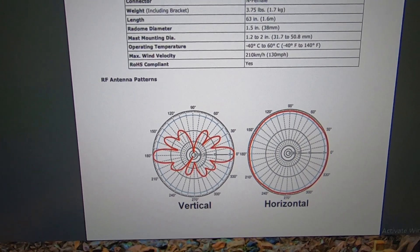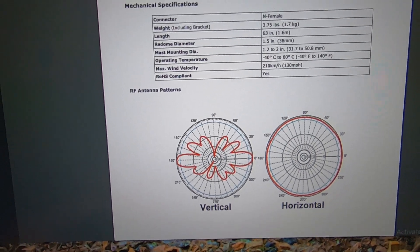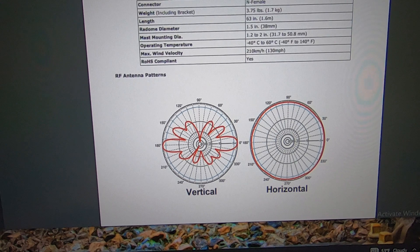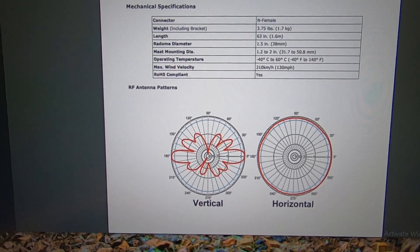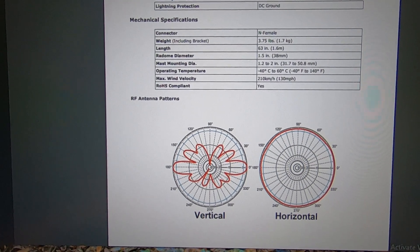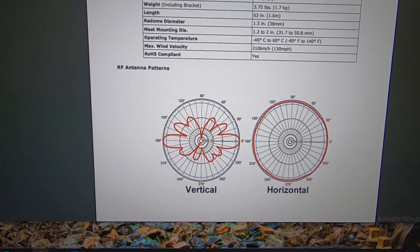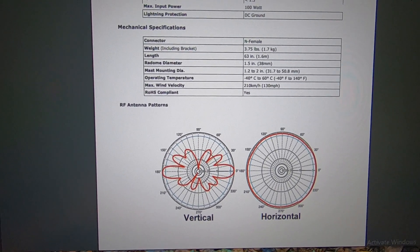Now a note on gain: anytime we go up in gain we get more directive. Think of it as turning the reflector on a flashlight. You don't have any more power, you're just changing its directivity more from a flood to a spot.